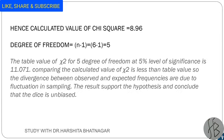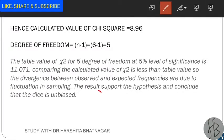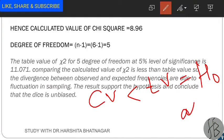The calculated value is 8.96, which is less than the table value of 11.071. So we say that the divergence between the observed and expected frequencies is due to fluctuation in the sample. The result supports the null hypothesis and we conclude that the dice is unbiased. Remember: when the calculated value is less than the table value, you accept the null hypothesis.